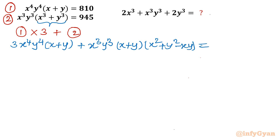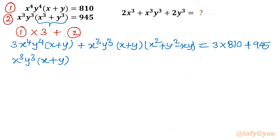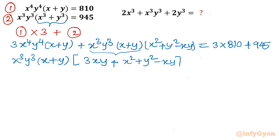The left-hand side is done. For the right-hand side: 3 times 810 plus 945. Now x³y³ is common and (x + y) is common — I take those out. In the first term what remains is 3xy, and in the second term what remains is (x² + y² − xy). So the RHS equals 2430 + 945.